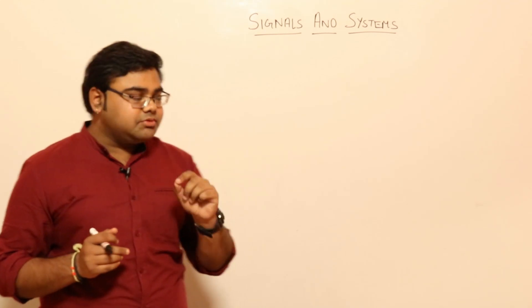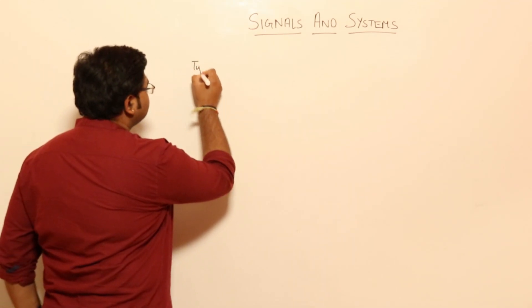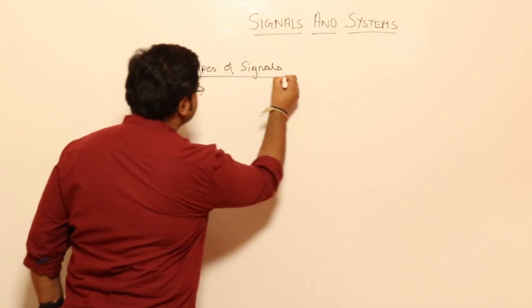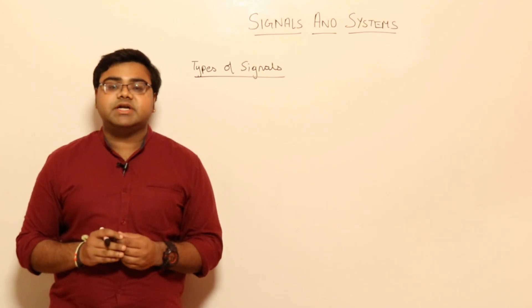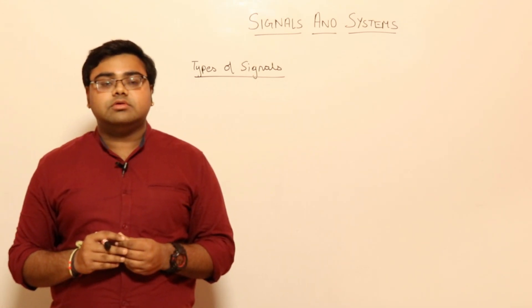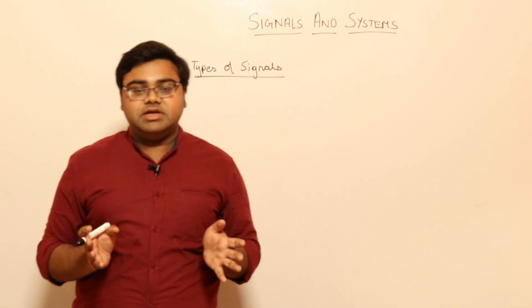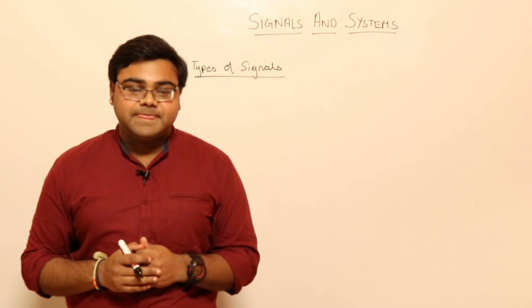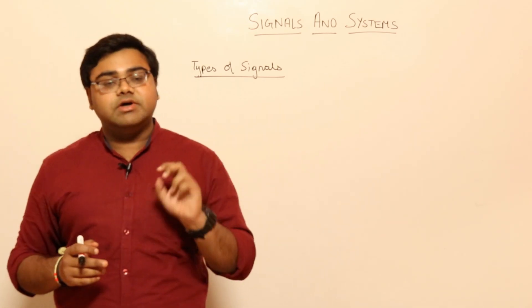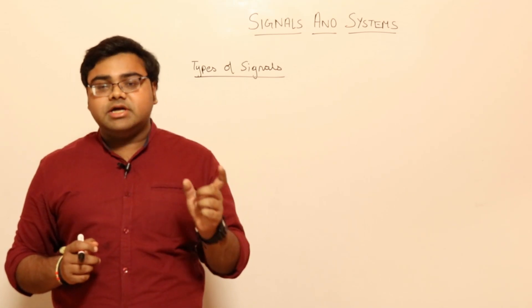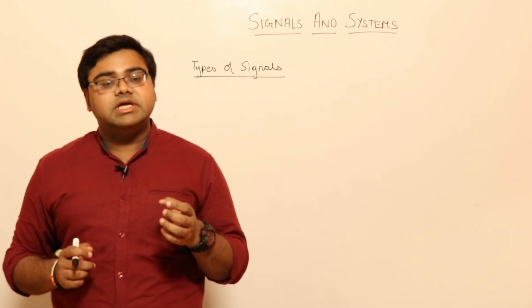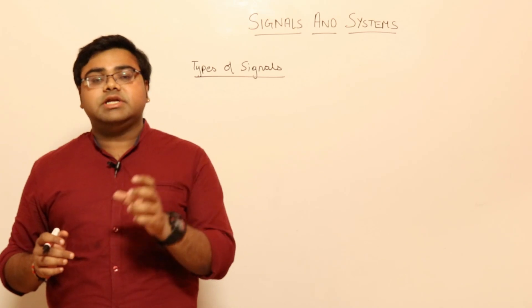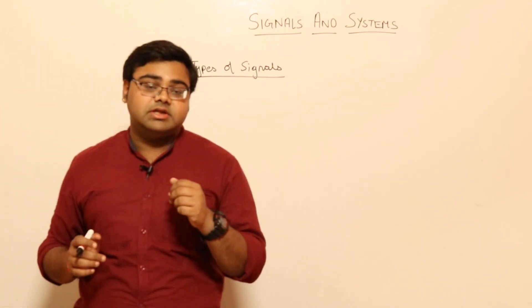In types of signals, we have different categories. From an exam perspective, you will definitely get one of two questions — either from periodic or aperiodic signals to find the period, or if the paper wants to check your knowledge in depth, they will ask you about even and odd signals. So the next variant is even and odd signals.